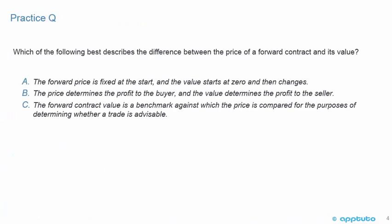We'll finish this LOS with one practice question. The next LOS explains how the value and price of a forward contract are determined at expiration, during the life of the contract, and at initiation, getting into the topic of forwards in depth. This section was just an introduction to show the difference between the forward price at $100 and the value at $5.85, and how the price and value are not necessarily comparable.